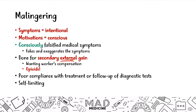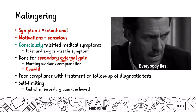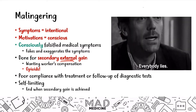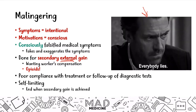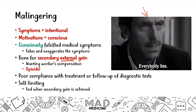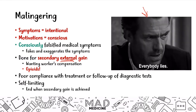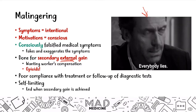Malingering is usually self-limiting — it goes away. Once they've accomplished their goal, it ends. If they got the drugs, they're done. It ends when the secondary gain is achieved. So examples include opioids and workers' comp. I put a GIF of Dr. House here — he always says 'everybody lies' — and that's how I remember malingering. Think of someone who comes to you just wanting drugs, faking their symptoms, with a conscious motivation. That's malingering.